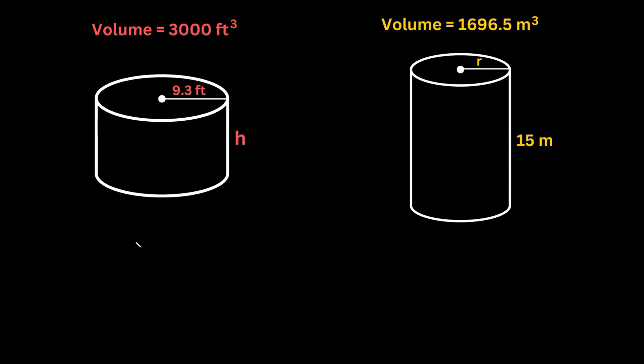So in order to do this, we want to use the formula for the volume of a cylinder, which is V equals pi r squared times h, where V is the volume, r is the radius, and h is the height.